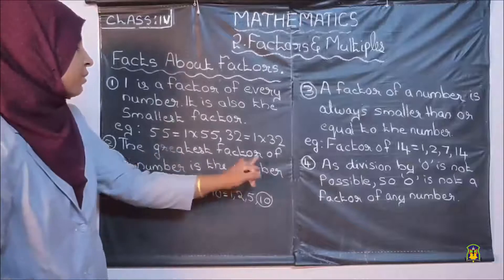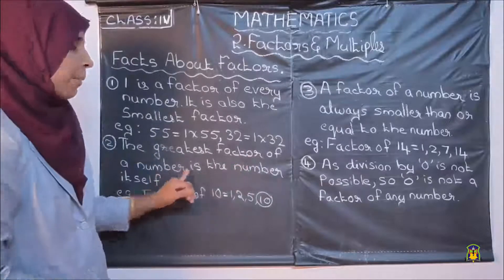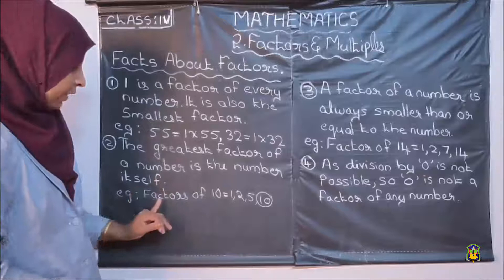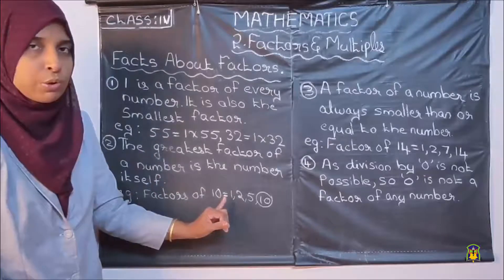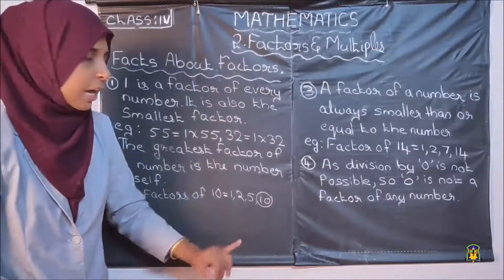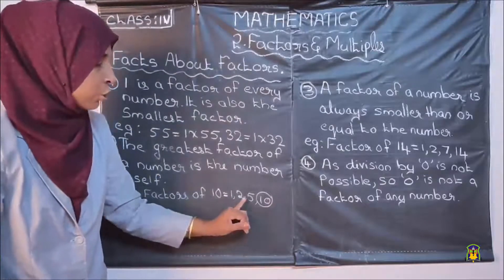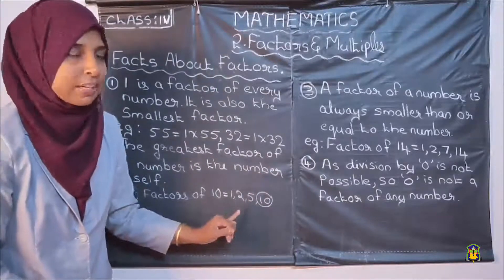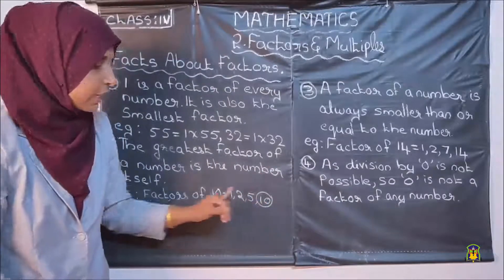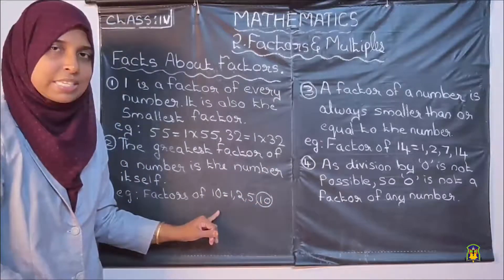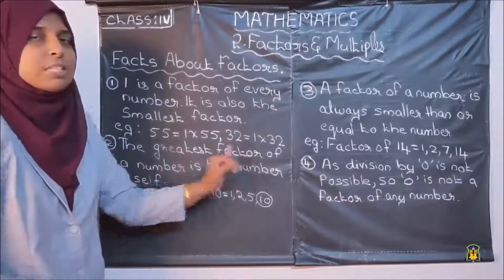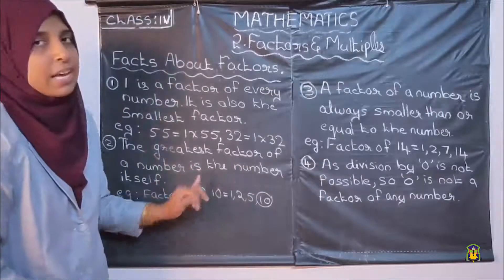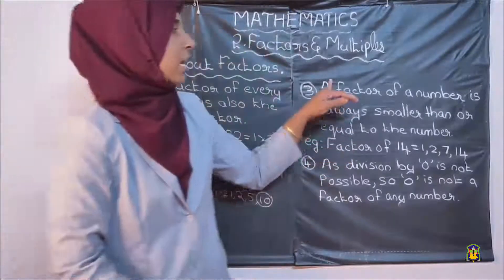Second point: the greatest factor of a number is the number itself. If we take factors of 10, the factors are 1, 2, 5, 10. Which is the greatest factor? 10 — the number itself. So the greatest factor of a number is the number itself.